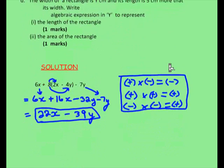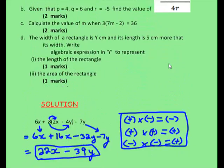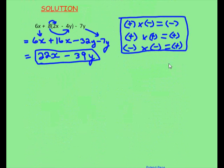Now the first part we're looking at is part a. Now this question I basically worked out earlier, so I'm going to look at the a part. We're given 6x plus 8 open bracket 2x minus 4y close bracket minus 7y. Now what I did here, I basically put some rules over here for multiplication.